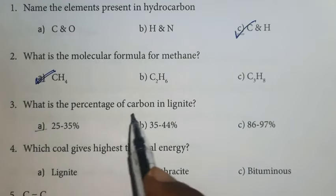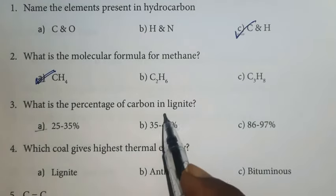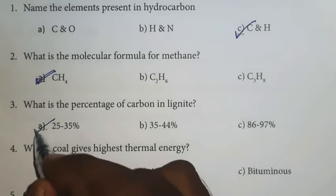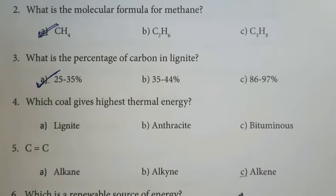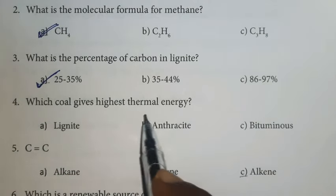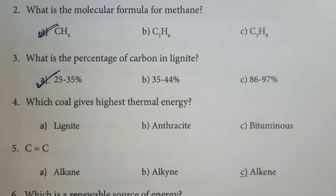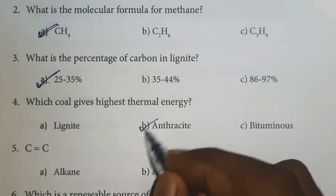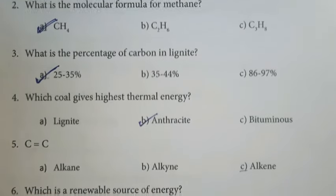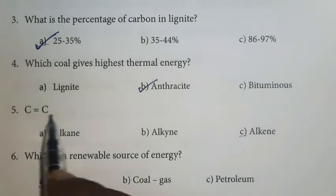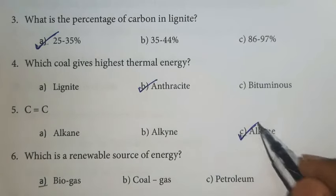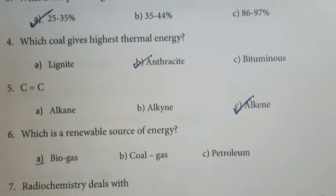Third one: what is the percentage of carbon in lignite? 25 to 35 percent. Option A is the right answer. Fourth one: which coal gives the highest thermal energy? The right answer is anthracite. Option B is the right answer. Fifth one: C11C is an alkene. Option C is the right answer.